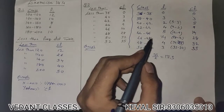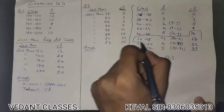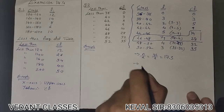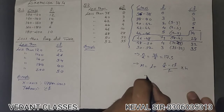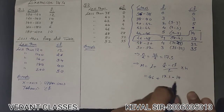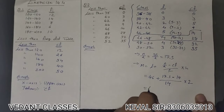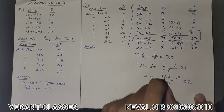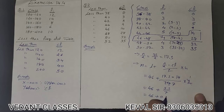17.5 lies between CF values 14 and 28, so the median class is 46–48. Applying the formula: m = l + (n/2 − CF)/f × h = 46 + (17.5 − 14)/14 × 2 = 46 + 3.5/7 × 2 = 46 + 0.5 = 46.5. This matches the value obtained from the graph.